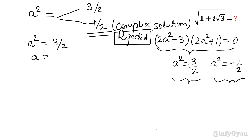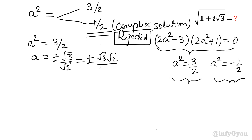So a equals plus or minus root 3 over root 2. Multiplying numerator and denominator by root 2, it becomes plus or minus root 6 over 2. Now let us find the value of b.